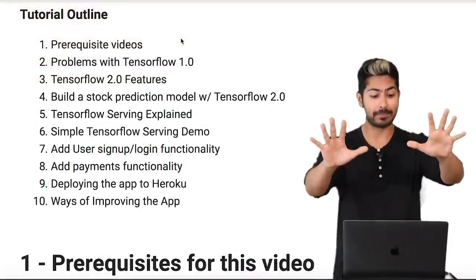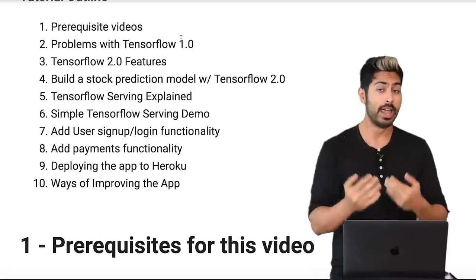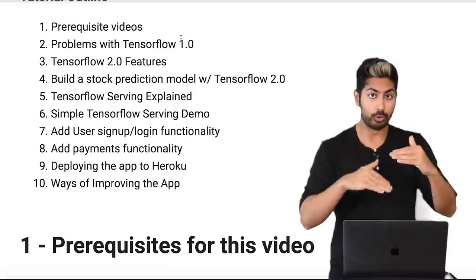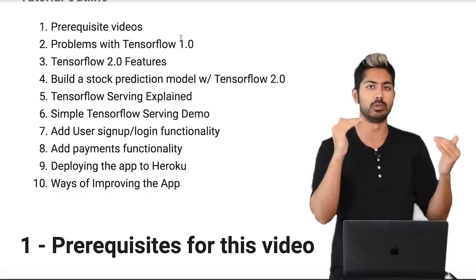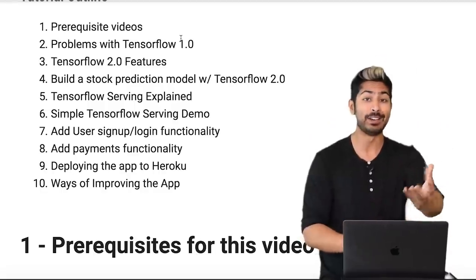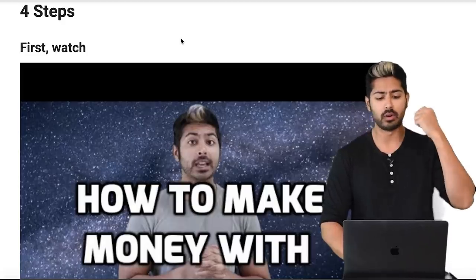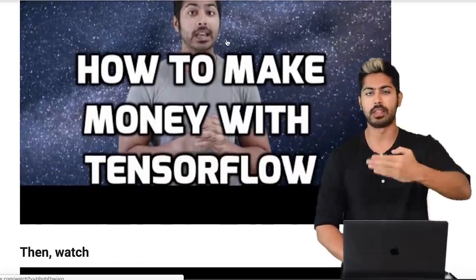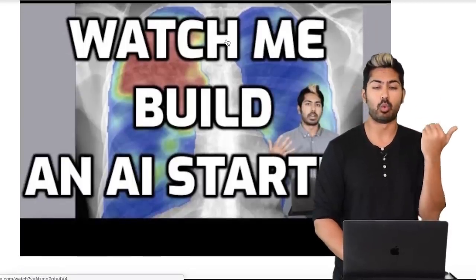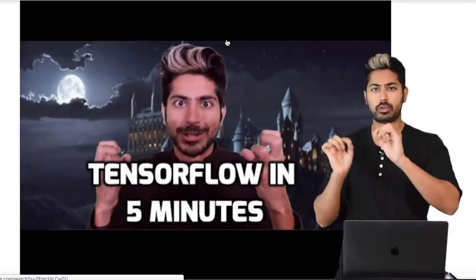In this tutorial there are 10 steps. We'll start by looking at prerequisite videos, then talk about the problems with TensorFlow 1.0 and how TensorFlow 2.0 fixes those problems. We'll build a stock prediction model in Colab, download that model, serve it using TensorFlow Serving, then add extra functionality like user authentication and payments, and finally deploy it to the web. At the end we'll talk about ways of improving the app. First, watch four videos: how to make money with TensorFlow, seven ways to make money with machine learning, watch me build an AI startup, and search for the intro to TensorFlow playlist on YouTube by Siraj.